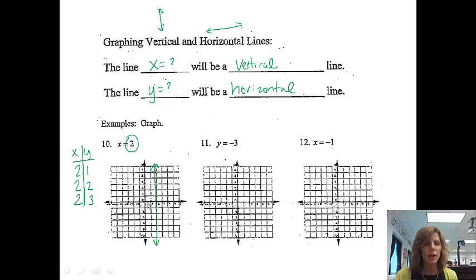So if I go to graph those points, the point 2, 1 is over 2 and up 1. The point 2, 2 is over 2 and up 2. And the point 2, 3 is over 2 and up 3. So notice they're forming that vertical line.